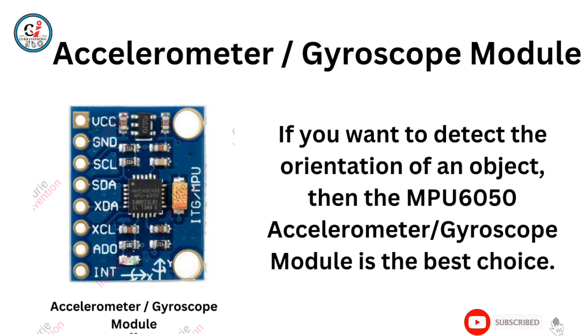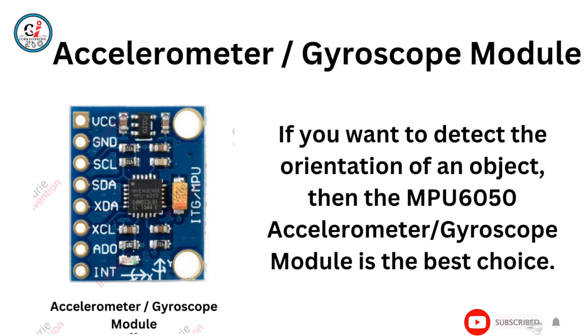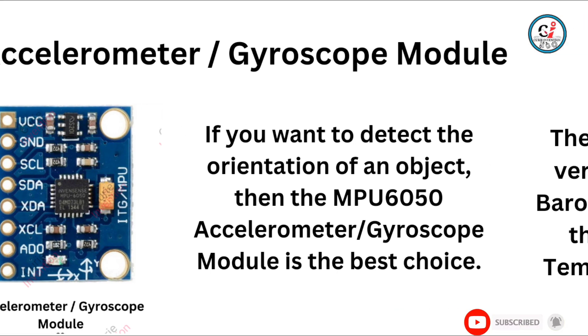Accelerometer Gyroscope Module. If you want to detect the orientation of an object, then the MPU-6050 Accelerometer Gyroscope Module is the best choice.